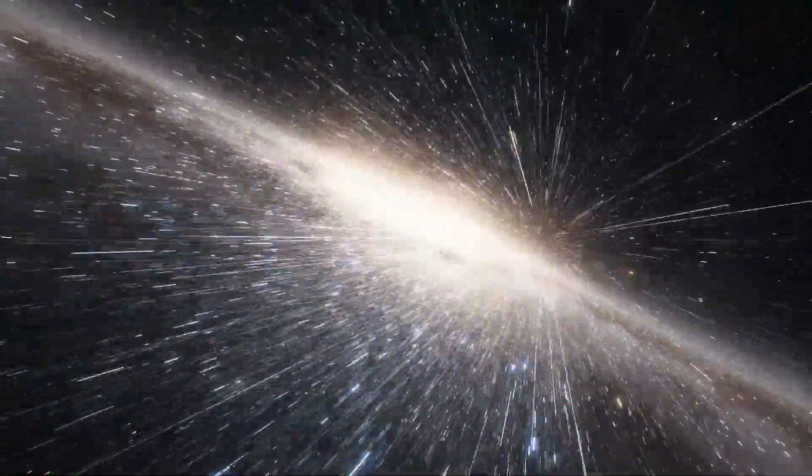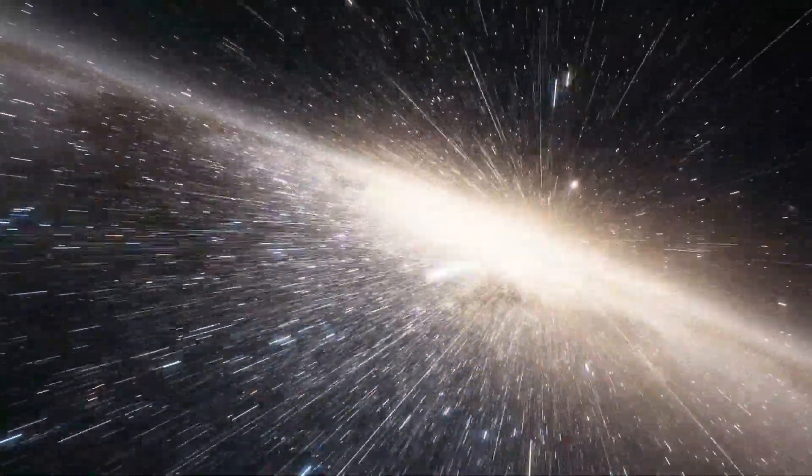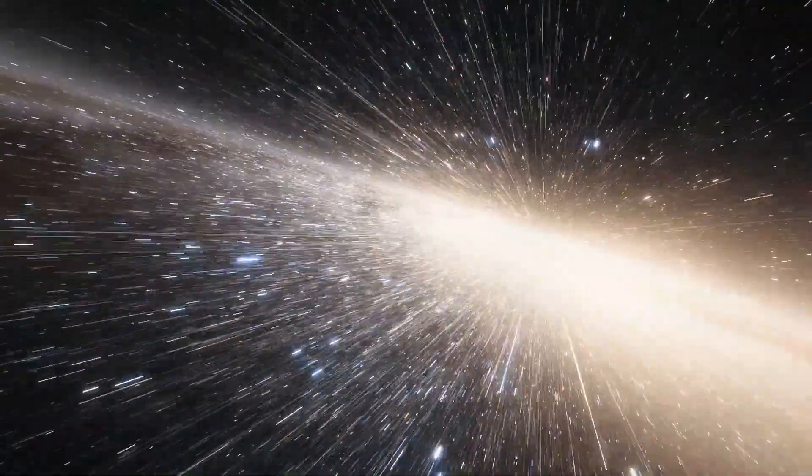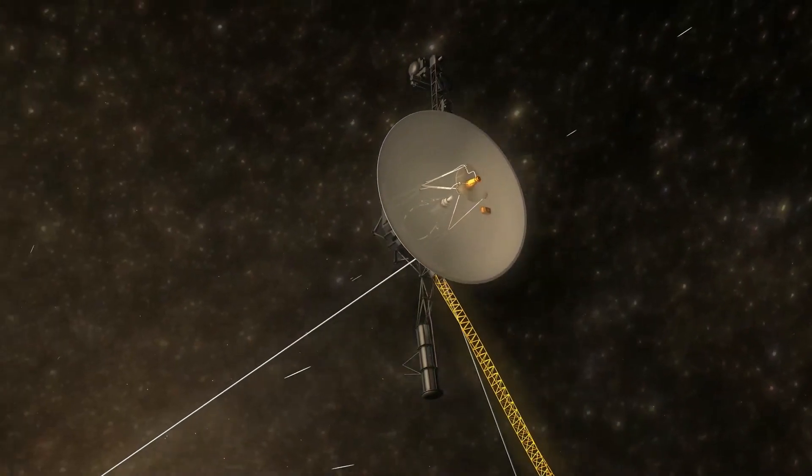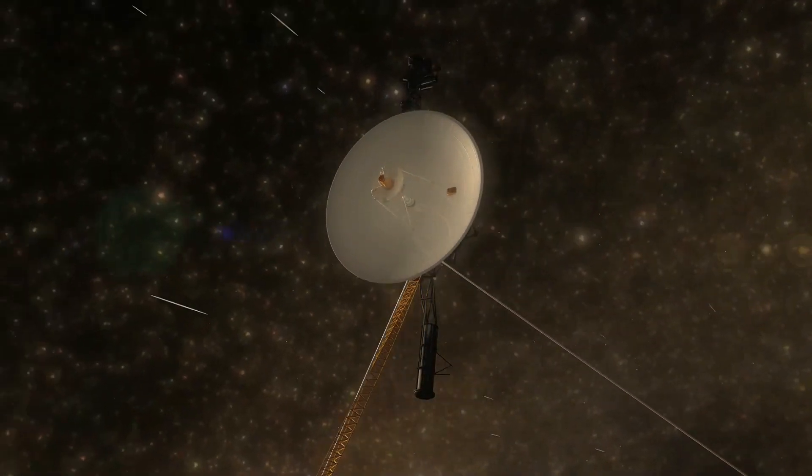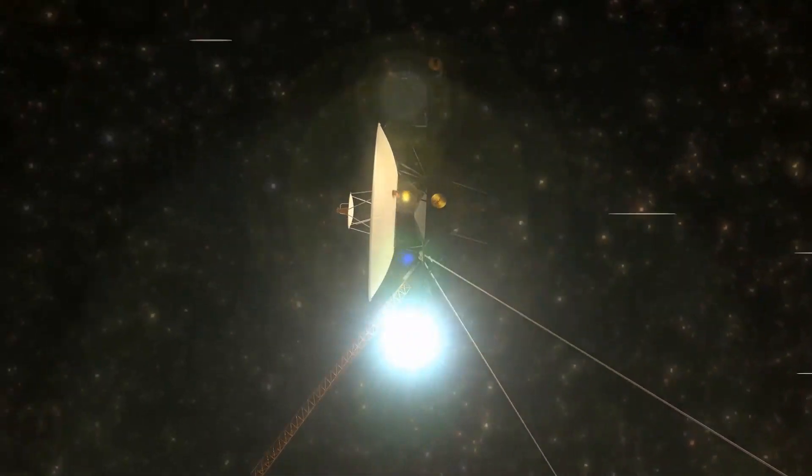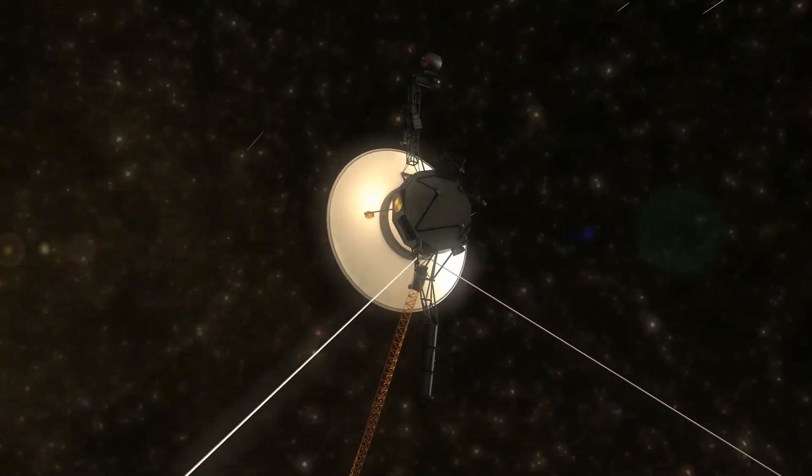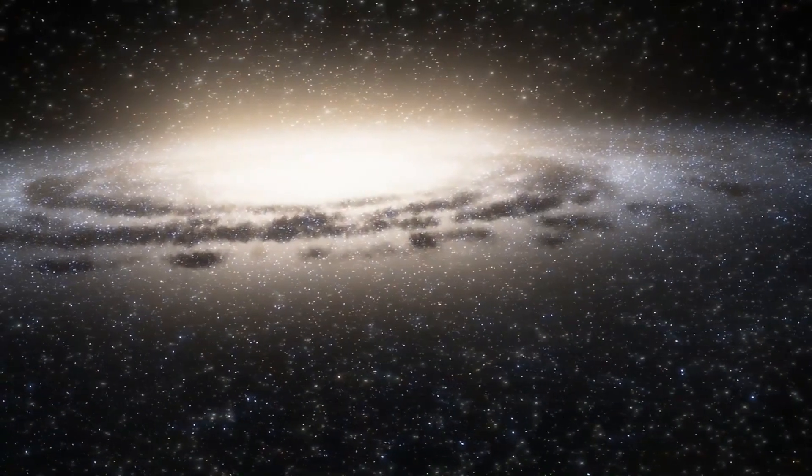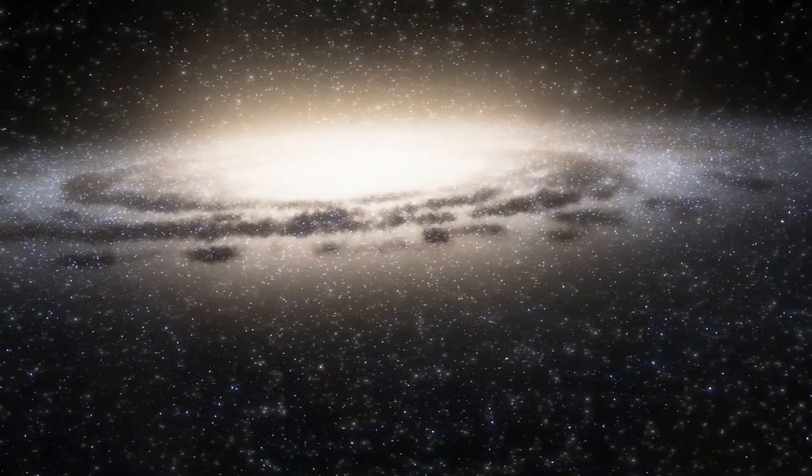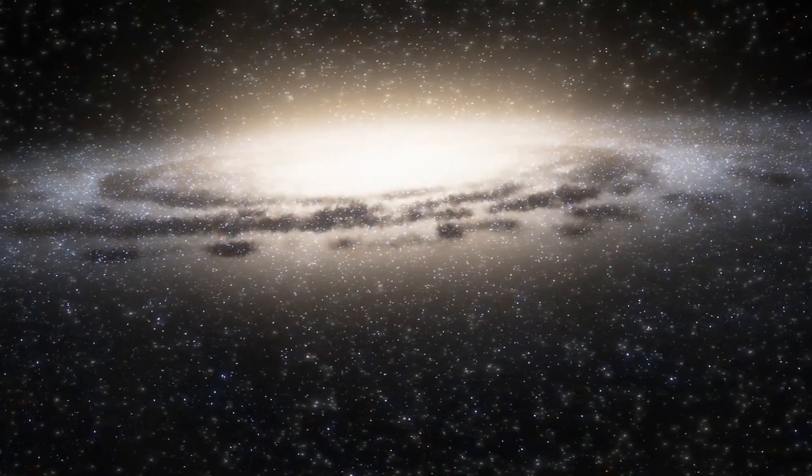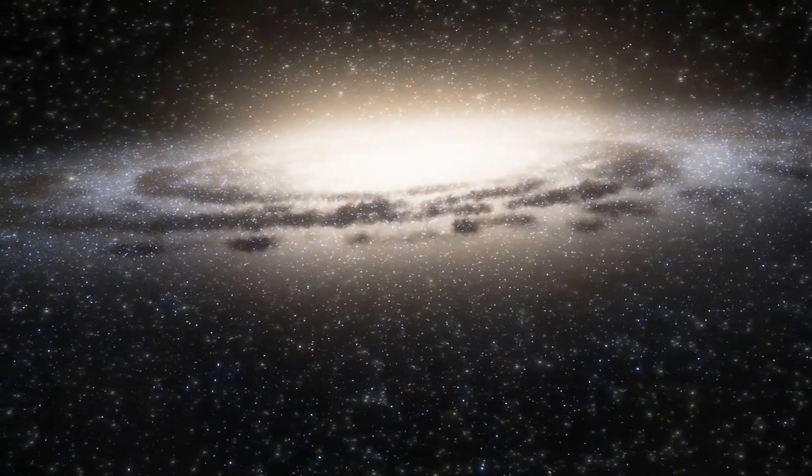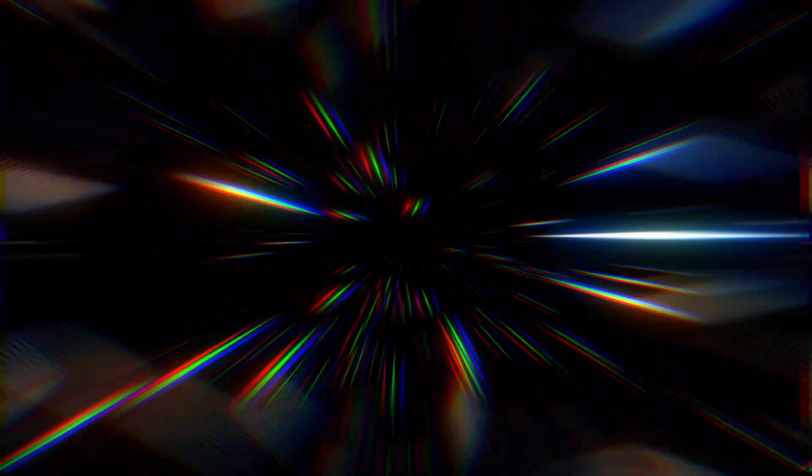Currently, the Voyager space probes are exploring the outer boundary of the heliosphere in interstellar space. As a result of their success, the mission has been extended three times as they continue to transmit useful scientific data. It was confirmed that on August 25, 2012, Voyager 1 had become the first man-made object to exit the solar system and enter interstellar space. A few years later, Voyager 2 also entered interstellar space in 2018.